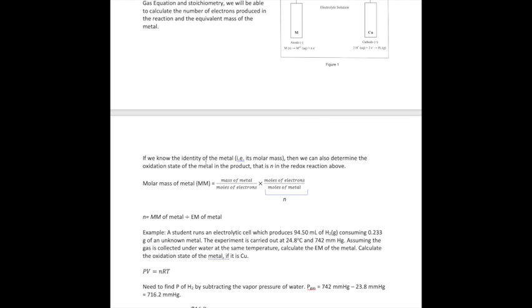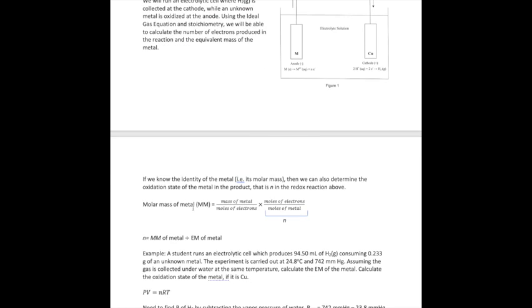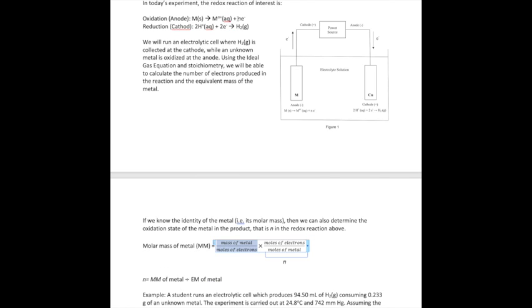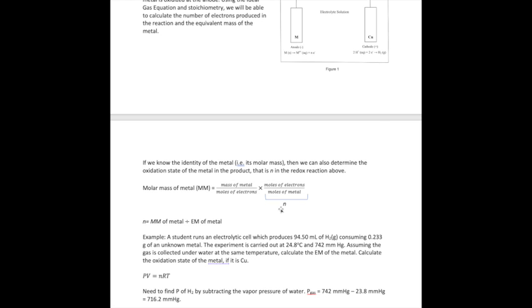If you happen to know the identity of the metal, you can calculate not just the equivalent mass, but also the oxidation state of the metal, figuring out that number N that we wrote in the oxidation reaction. For example, if I were to tell you that the metal itself is copper, you can find the molar mass. The molar mass of the metal is the mass of the metal over the moles of metal times the moles of electrons over moles of metal. To convert equivalent mass to molar mass, multiply it by the moles of electrons divided by the moles of metal. If I want to calculate N, I can take the molar mass of the metal divided by the equivalent mass. Let me show you how to calculate the equivalent mass once you get the experimental data.